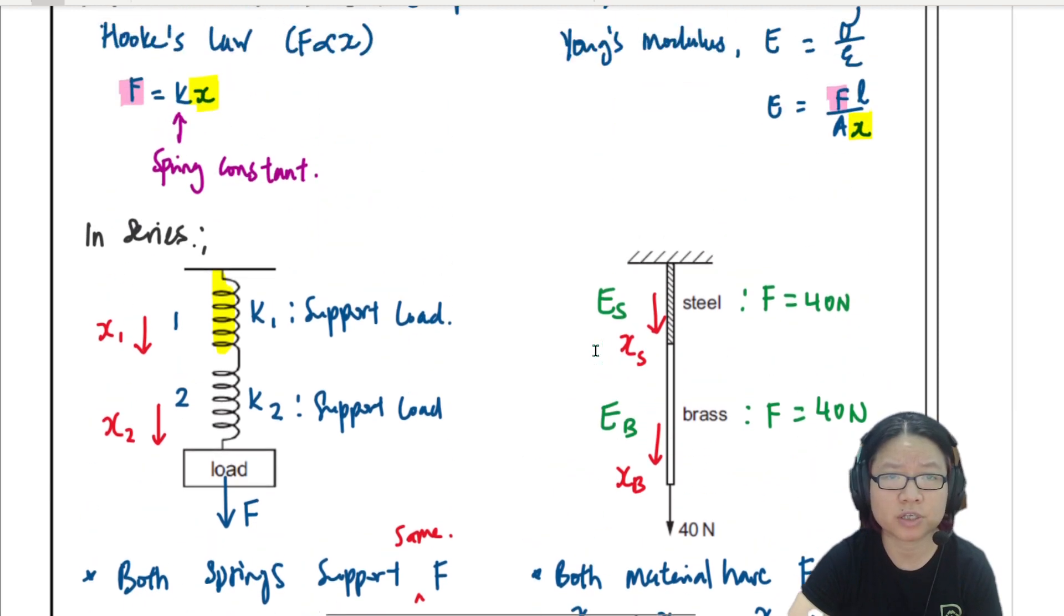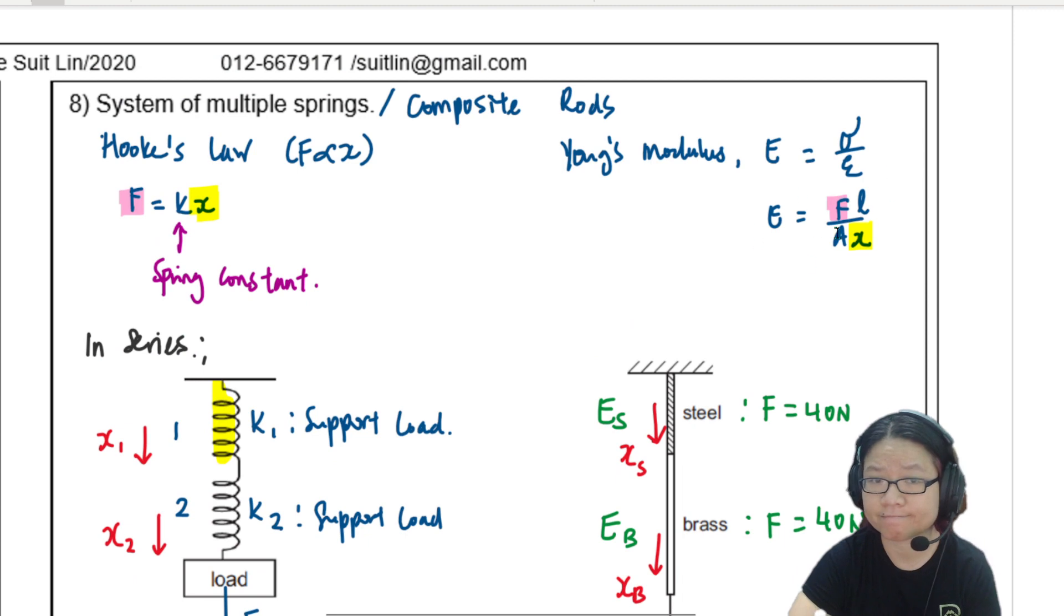And then after that, you can look at your young modulus equation here. So if I rearrange this, I will have extension is equal to FL over EA.